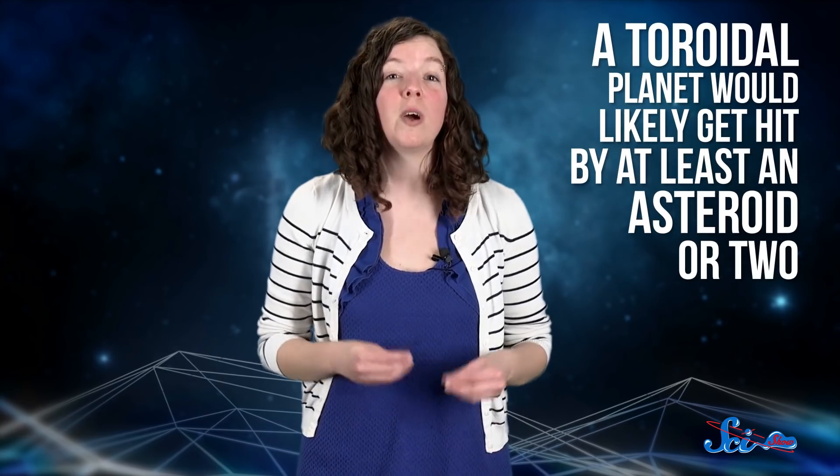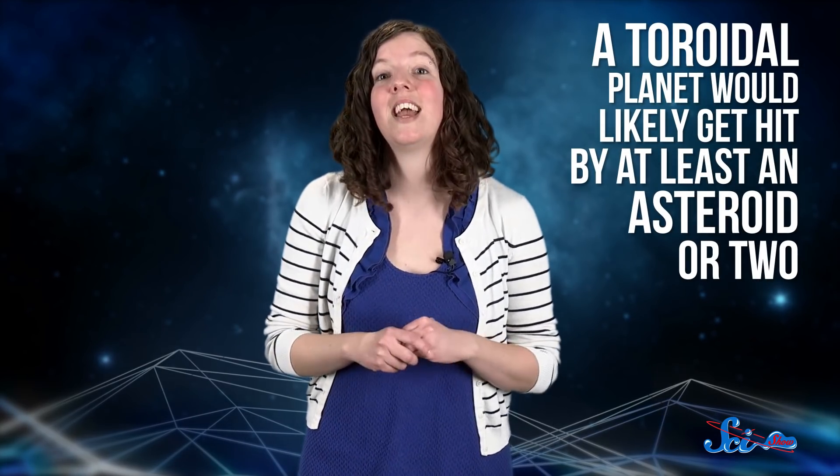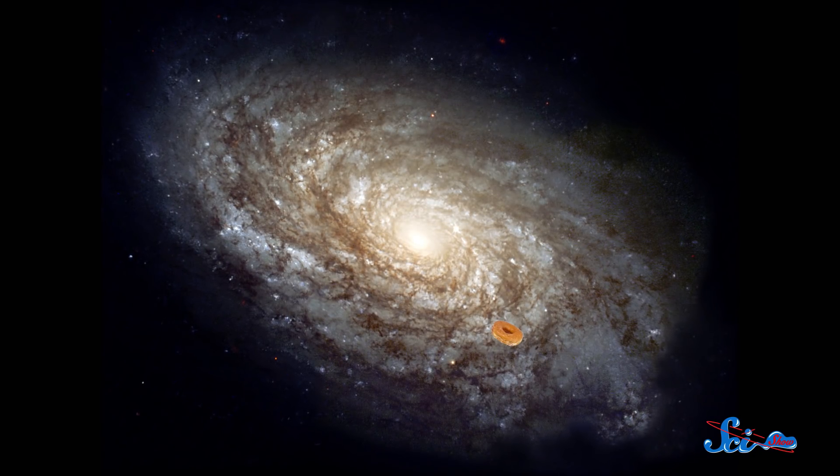So odds are that a toroidal planet, if it did exist, would get hit by at least an asteroid or two. But it's a big universe out there. Out of all the planets in the whole universe, it's possible that some of them are shaped like donuts.